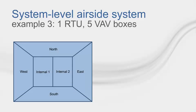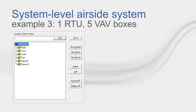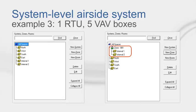For our last system-level airside system example, let's imagine having one VAV box serving more than one space. Both internal spaces will be tempered by the same VAV box. To have two or more rooms covered by one VAV box, the creation of a zone is required. Simply create the zone by hitting the New Zone button and placing the two rooms underneath it. Note the system that is selected is the system that will receive the new zone. To model this example for energy analysis, you will also have to specify a thermostat location of zone for all the rooms served by the same terminal device.